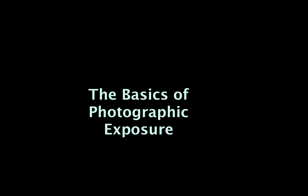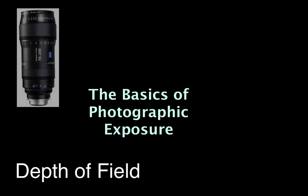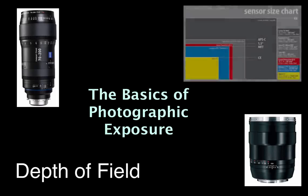Welcome. This is Kevin Woodbury for Twin Suns Tutorials. Today I'm going to talk about exposure and depth of field. Depth of field is defined as that area before and after a subject of an image that's in sharp focus. Shallow depth of field means the subject is sharp but the foreground and background are blurred. Great or deep depth of field means that everything within the image is sharp and in focus.